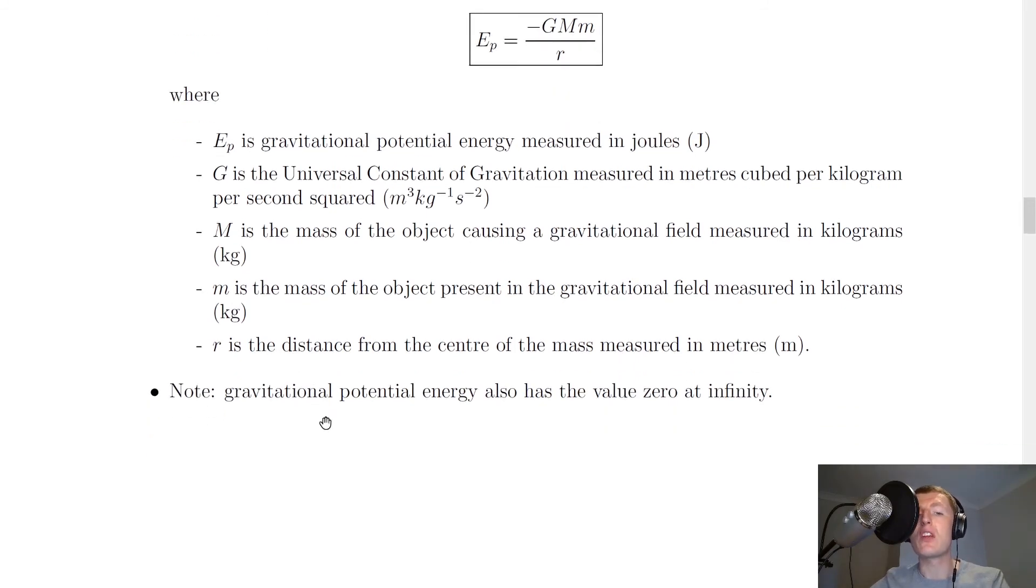It then says to note that gravitational potential energy also has the value of zero at infinity, which we saw in the first animation earlier, where we brought the smaller mass closer to the bigger mass and your work done value decreased, i.e. it became more negative, which showed that the gravitational potential energy gets more negative as you bring the masses closer together.